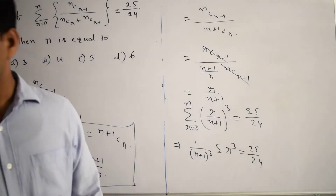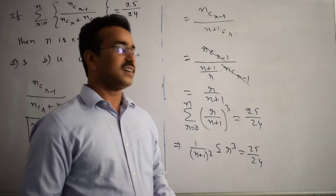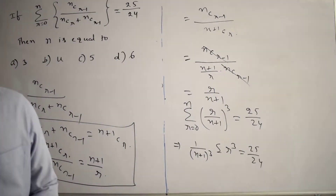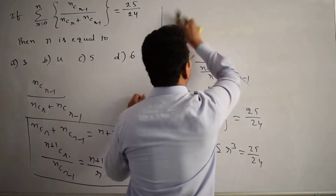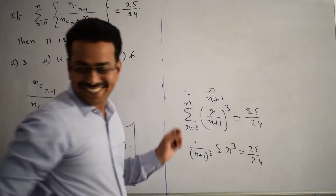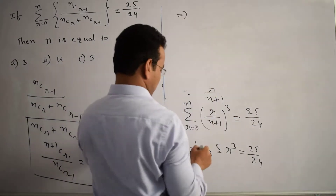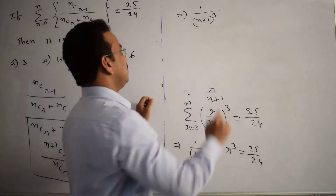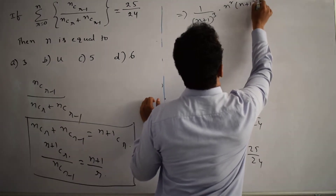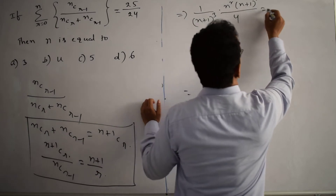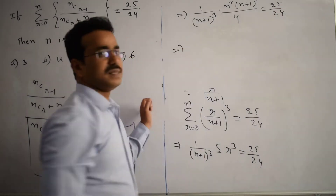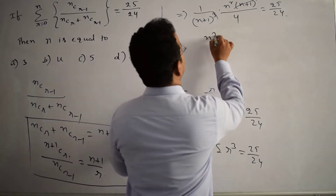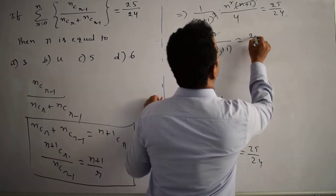The formula for summation R cubed from R equals 0 to N is N squared times (N+1) squared divided by 4. Substituting, we get 1/(N+1) cubed times N²(N+1)²/4 equals 25 by 24. The (N+1) squared cancels with (N+1) cubed, giving N squared divided by 4(N+1) equals 25 by 24.